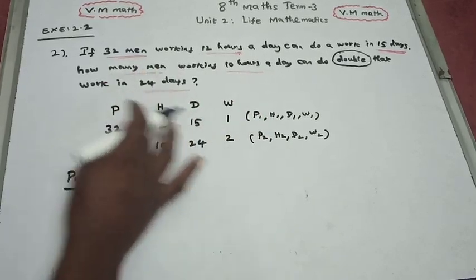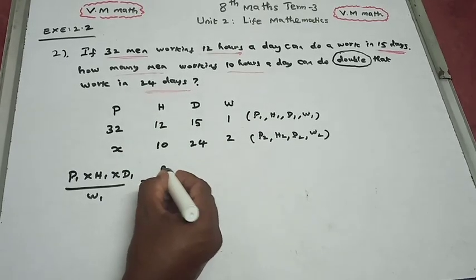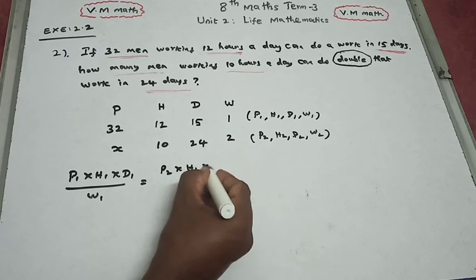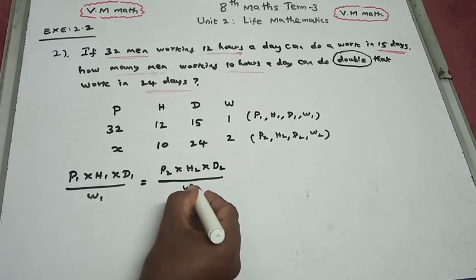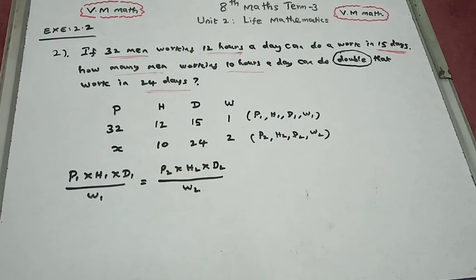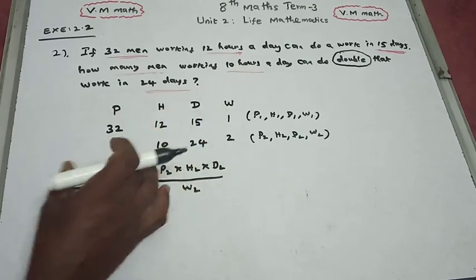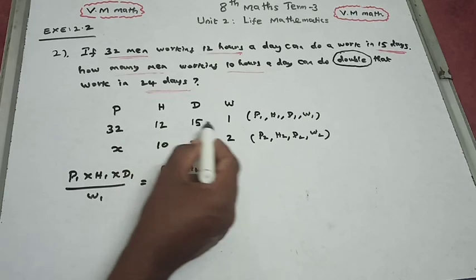So this is the first side, so this is the second side: P2 into H2 into D2 divided by W2. Alright, the formula is: work W is in the denominator and the quantities in the numerator with multiplication. So P1 into H1 into D1 divided by W1.